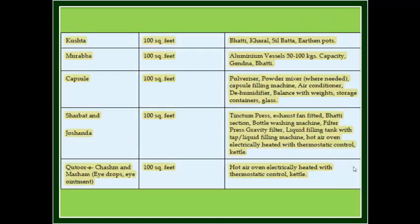Category 4: Kushta. Space required: 100 square feet. Recommended equipment: bhatti, kharaal, seal bhatta, earthen pots, etc.